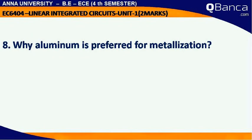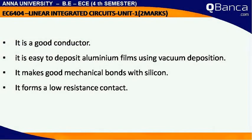Why is aluminum preferred for metallization? Aluminum is a good conductor. It is easy to deposit an aluminum film using vacuum deposition. It makes a good mechanical bond with silicon, and it forms a low-resistance contact.